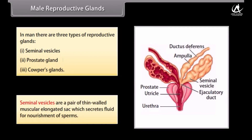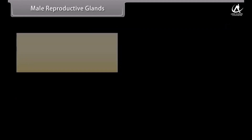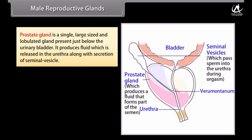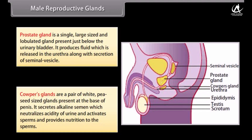In men there are three types of reproductive glands: seminal vesicles, prostate gland, and Cowper's glands. Seminal vesicles are a pair of thin-walled muscular elongated sacs that secrete fluid for nourishment of sperms. The prostate gland is a single large lobulated gland present just below the urinary bladder that produces fluid released into the urethra. Cowper's glands are a pair of white pea-sized glands at the base of the penis that secrete alkaline fluid to neutralize urine acidity, activate sperms, and provide nutrition.